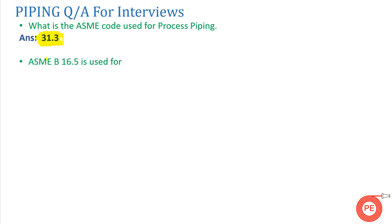The next question is: what does ASME B16.5 stand for? This standard is applicable for carbon steel flange fittings. If someone asks about ASME B16.1, that is for cast iron flange fittings. So for cast iron flange fittings you refer B16.1, and for cast steel flange fittings you refer ASME B16.5. Don't get confused between the two.